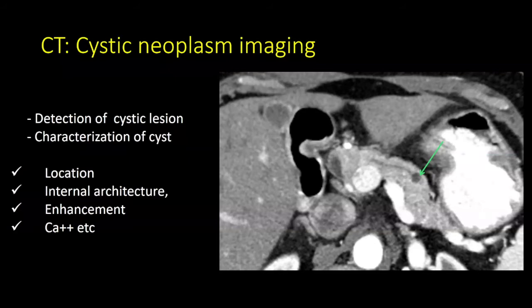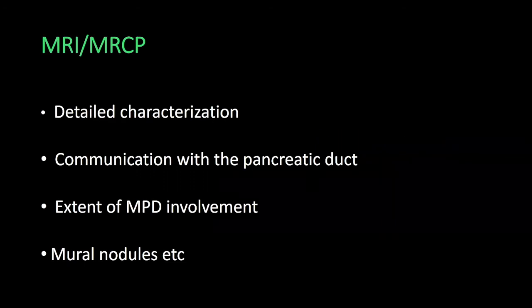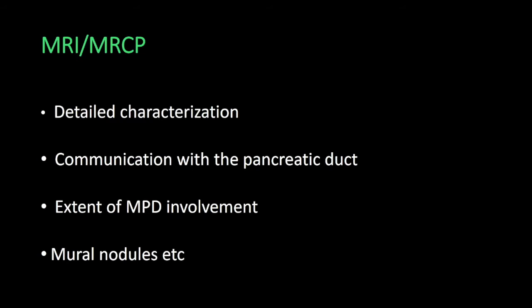With the increased use of CT and MRI, we see incidental cystic lesions every day. It's really important to figure out if these are benign or malignant and what should be the appropriate follow-up guidelines. On CT scan, we can talk about location, internal architecture, enhancement, calcification, etc. But MRI and MRCP provide much more detailed characterization — whether the lesion communicates with the pancreatic duct, complexity, septations, extent of main pancreatic duct involvement, and many other things not seen as well on CT.